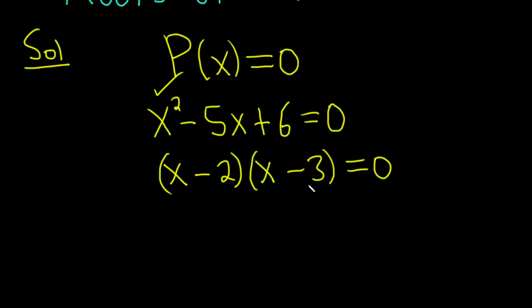Negative 2 times negative 3 is positive 6. Negative 2x and negative 3x, they add to negative 5x. So it checks.